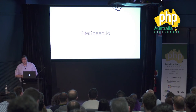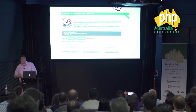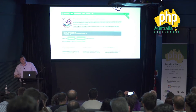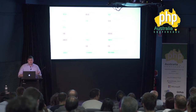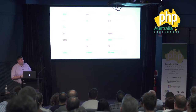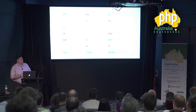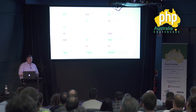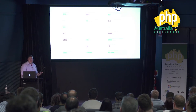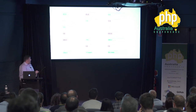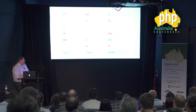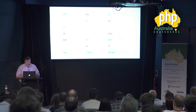Sitespeed.io allows you to analyze website performance and build custom dashboards. It shows rule score, average number of images per page, average DNS lookups per page, and caching time. Integrating it into Jenkins makes it easy to see what's changed between builds at a glance.